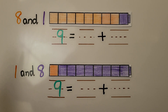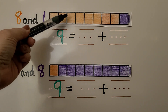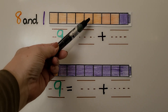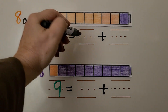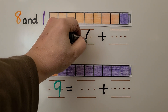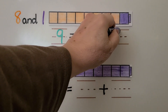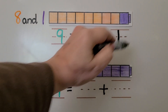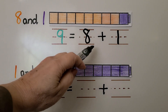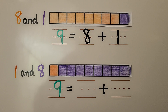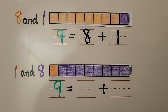Here we have a cube train with nine cubes. We have one, two, three, four, five, six, seven, eight orange cubes. We can write the number eight, and we have one purple cube. We can write the number one for the purple cubes. Nine is equal to eight plus one. Eight and one put together is equal to nine.